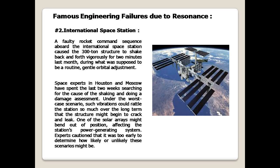Famous engineering failures due to resonance — Case 2: International Space Station. A faulty rocket command sequence aboard the International Space Station caused the 300-ton structure to shake back and forth vigorously for two minutes during what was supposed to be a routine, gentle orbital adjustment. Space experts in Houston and Moscow spent two weeks searching for the cause of the shaking and conducting a damage assessment.